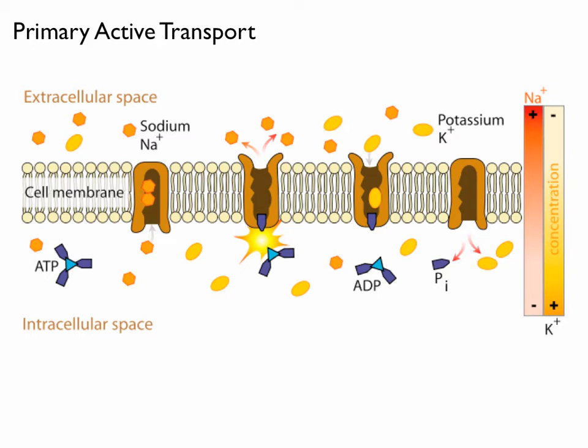Let's get back to primary active transport. Primary active transport means ATP is being used directly to pump something across the cell membrane. In this case, we're going from a low concentration to a high concentration — the opposite direction of diffusion. The little orange hexagons represent sodium ions. They exist in low concentration inside the cell but high concentration outside. To get them out, the cell uses ATP. There's a protein trap door specifically designed to accommodate sodium ions; ATP closes the inner end and opens the outer end to release the sodium ions.